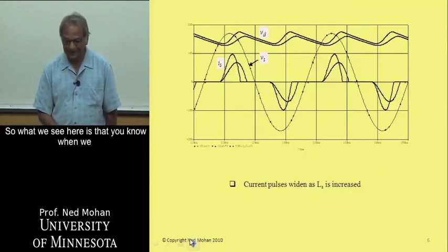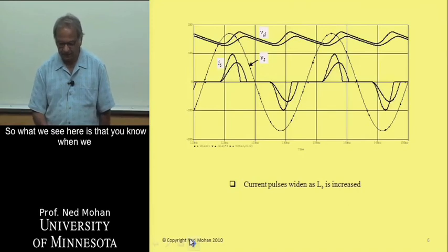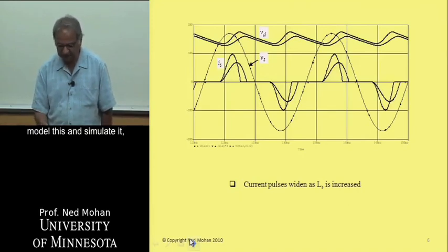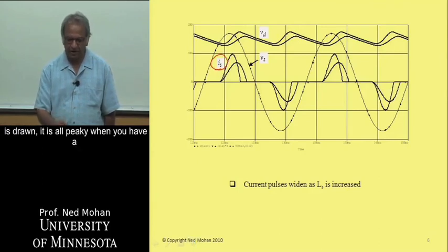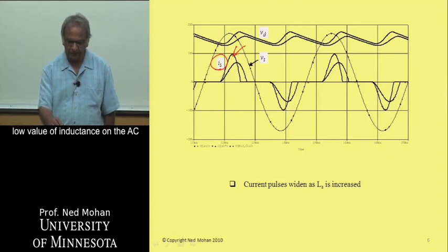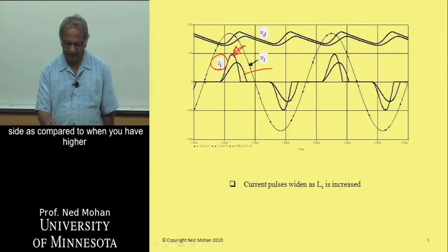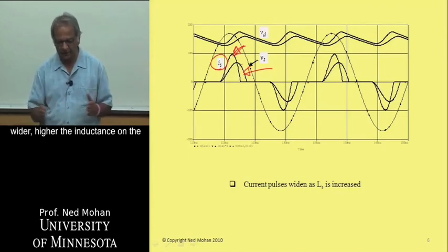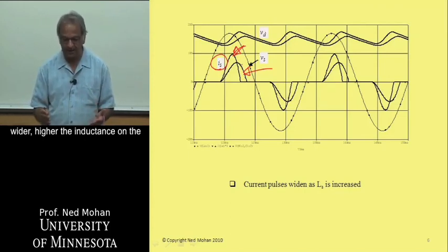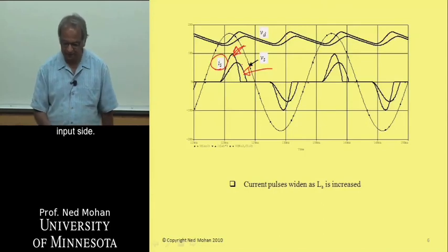What we see here is that when we model this and simulate it, we see that this current IS that is drawn, it is more peaky when you have low value of inductance on the AC side as compared to when you have higher value of inductance. So the base of this current drawn becomes wider, higher the inductance on the input side here.